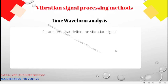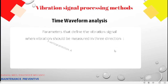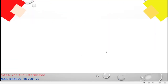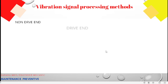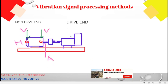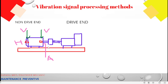When we take vibration measurements we have three directions: vertical, horizontal, and axial. Here is an example using a pump — we can see the vertical, horizontal, and axial directions illustrated on it.